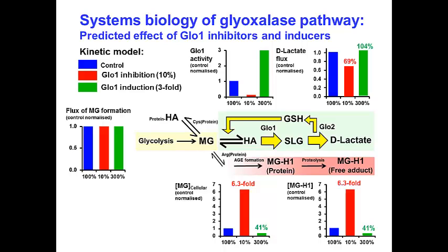However, this forces methylglyoxal to further modify protein, and so we expect over a six-fold increase in glycation adduct — 6.3-fold was predicted. In the green situation, where we achieve a three-fold induction of glyoxalase 1 — for example through compounds exploiting the functional antioxidant response element in the promoter — a three-fold increase in activity slightly increases D-lactate flux, decreases the steady-state concentration of methylglyoxal to 41% of control, and produces a concomitant ~60% decrease in glycation adduct.